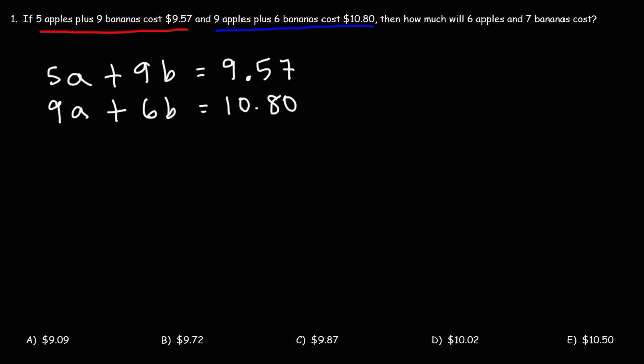So what we have here is a system of linear equations. All we need is two equations to solve for two variables. Once we get the values of A and B, then we can answer the third part of the question.